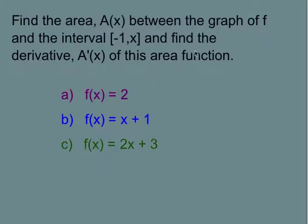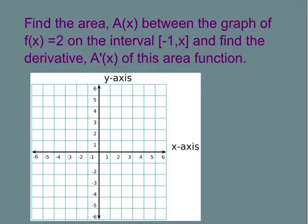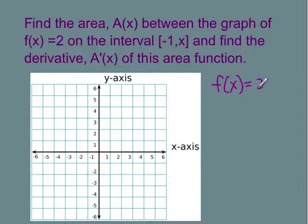So you're going to find out what the area of the function is and then find the derivative. For this first example, we're going to start with f of x equals 2. If I graph that, that's going to be a horizontal line right here at f of x equals 2.